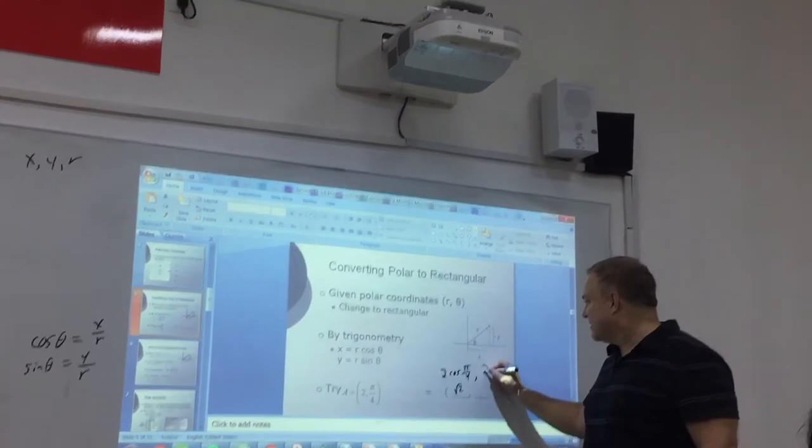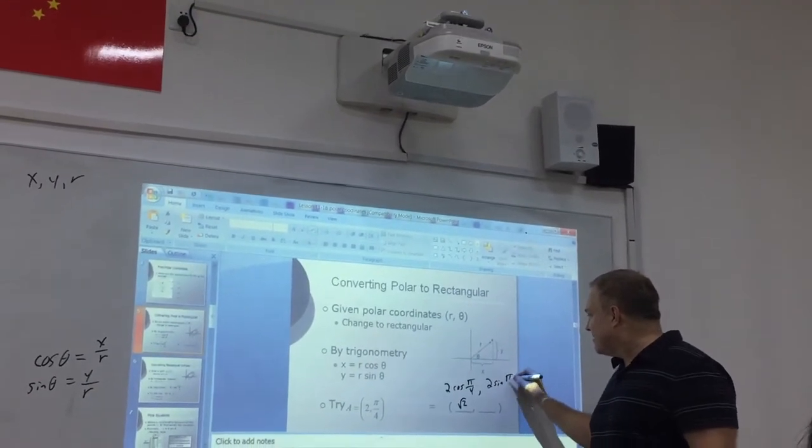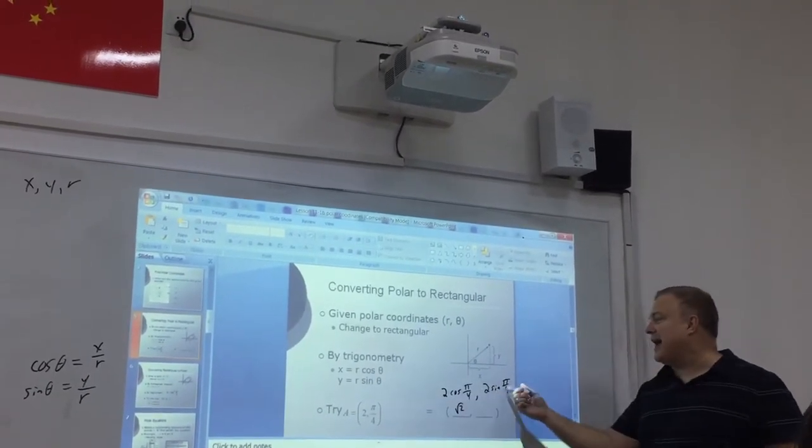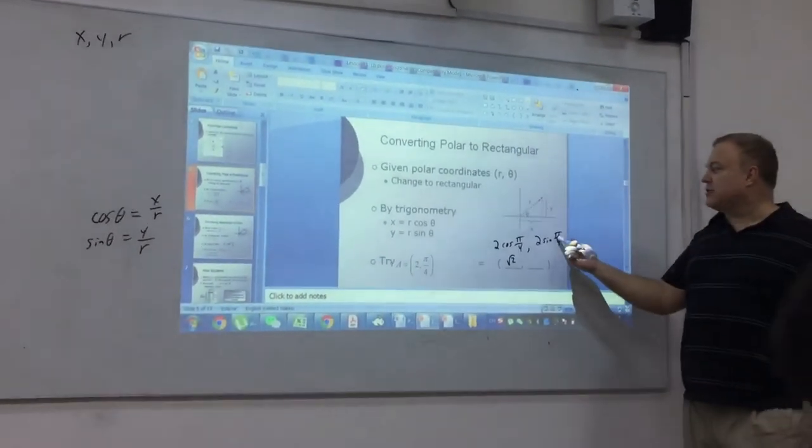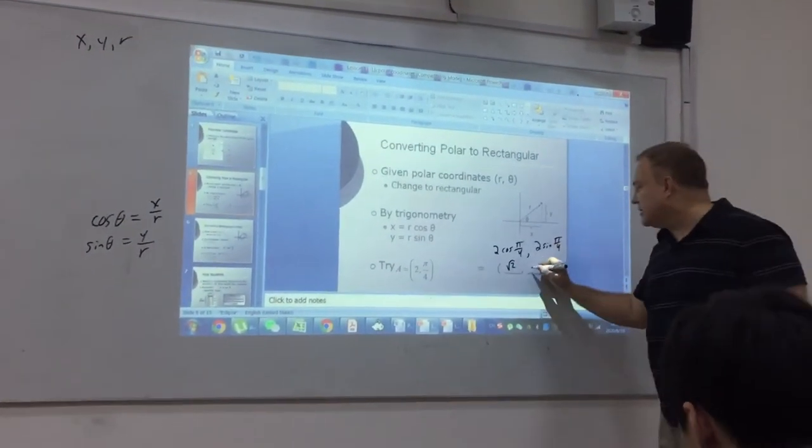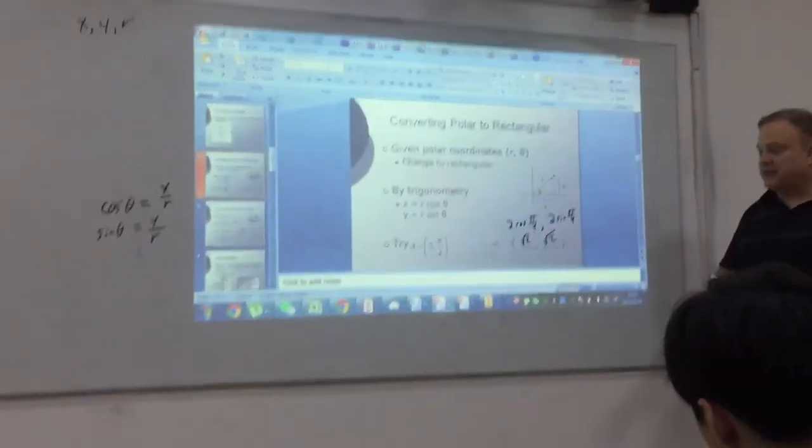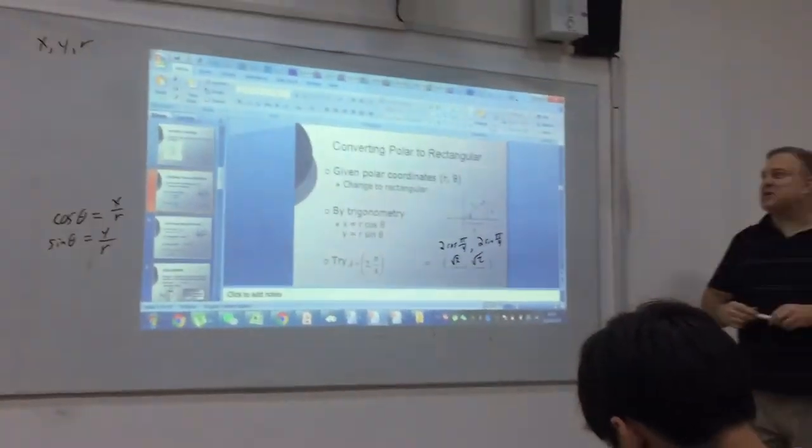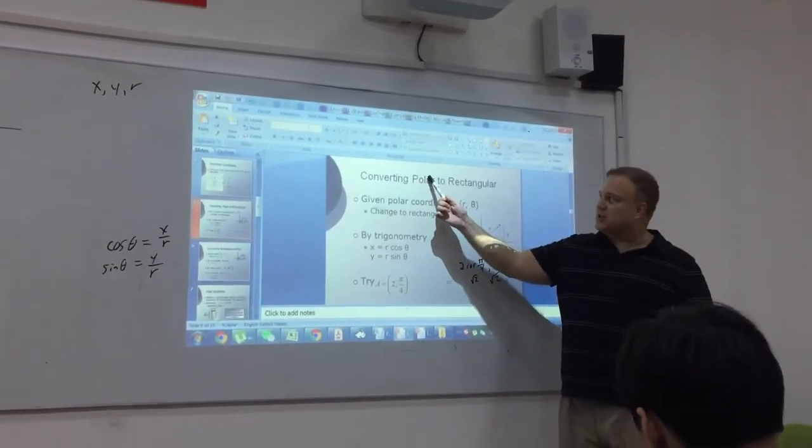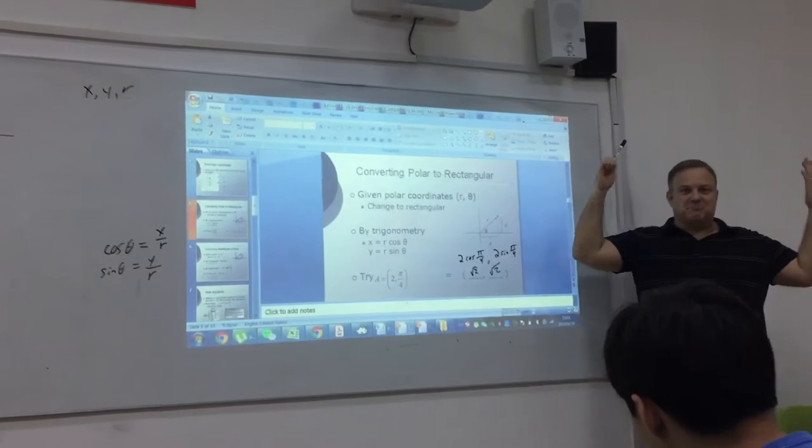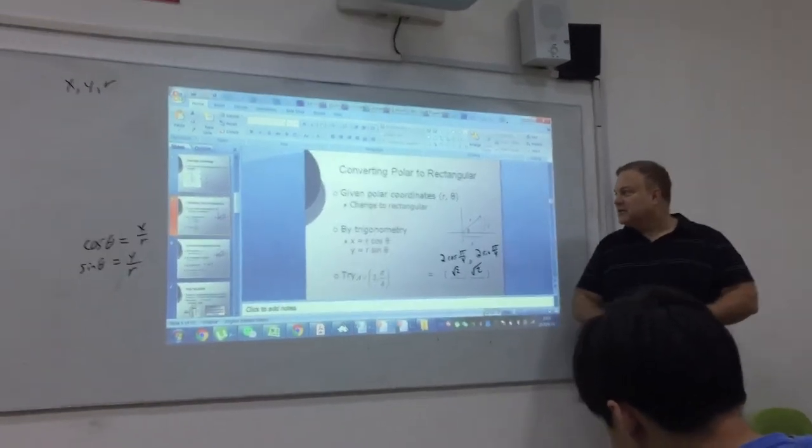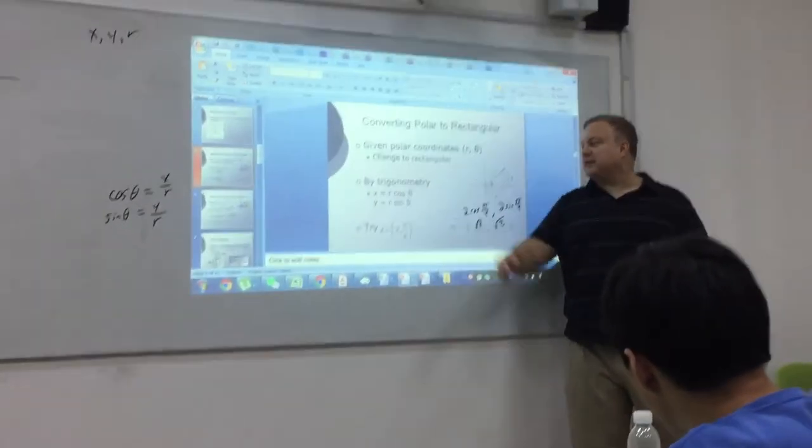So sine of pi over four, same thing. Square root of two over two times two is square root of two. So there you go. So if you want to take a point that is in polar coordinates and convert it to rectangular coordinates, you just use these. Pretty easy, right? Just put the numbers in from R and theta, calculate it.